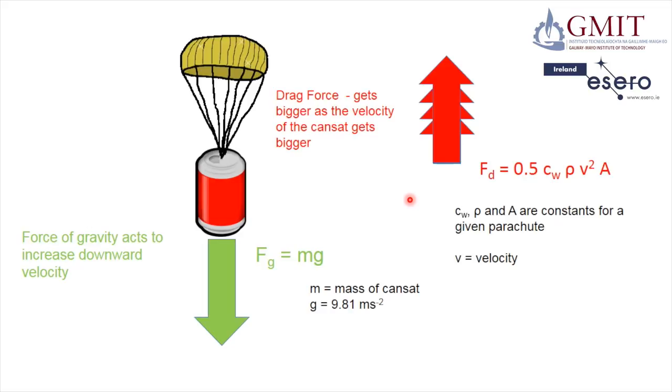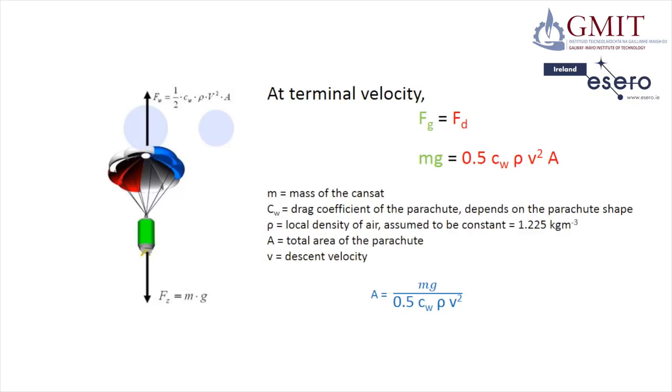And at that point the two forces cancel each other out and there's zero net force acting on the CAN. This doesn't mean that the CAN just stops. It means it stops accelerating. So it moves at a steady velocity called the terminal velocity.